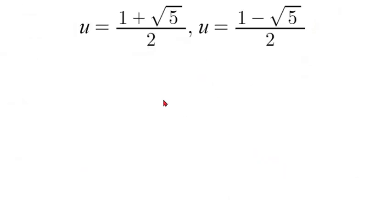So once we simplified that we would have two possible solutions. We'd have 1 plus square root of 5 over 2 and 1 minus square root of 5 over 2. Now that we solved for u we can substitute our original u value back in which is 5 over 4 to the power of x.